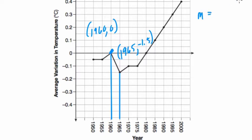Well, m is going to be equal to the difference in y, so 0 minus negative 1.5, which is just 1.5. And then you could do 1960 minus 1965,